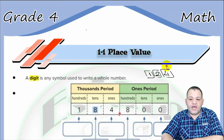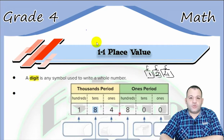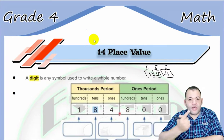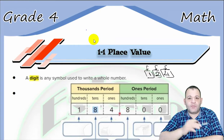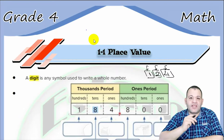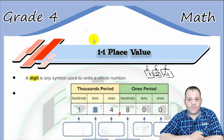The first digit is four, the second is two, and the third is one. For each digit we can write only one whole number. Each digit has a place, and this place is defined by the place value.